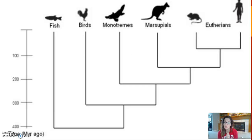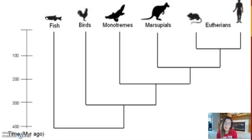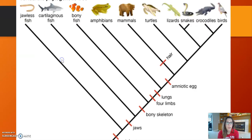The closer two species are on a phylogenetic tree, the more recent the speciation event that separated them, and therefore the more closely related they are. This makes sense because humans are way more closely related to marsupials than we are to fish — we have more things in common because our common ancestor existed more recently than the common ancestor between humans and fish.